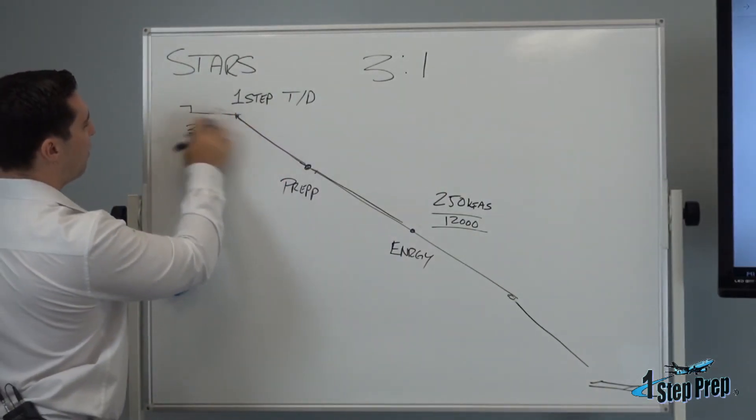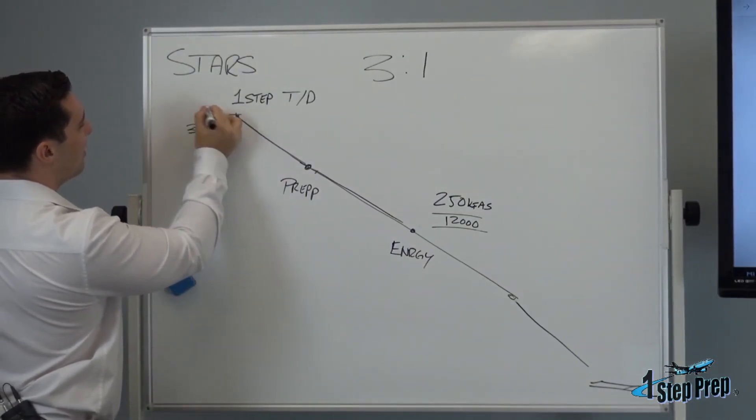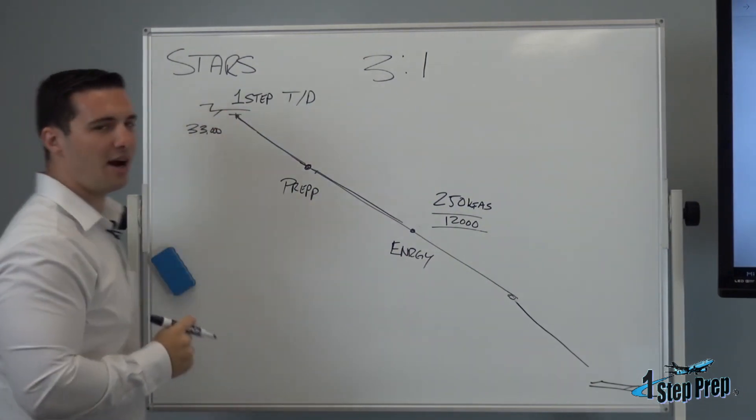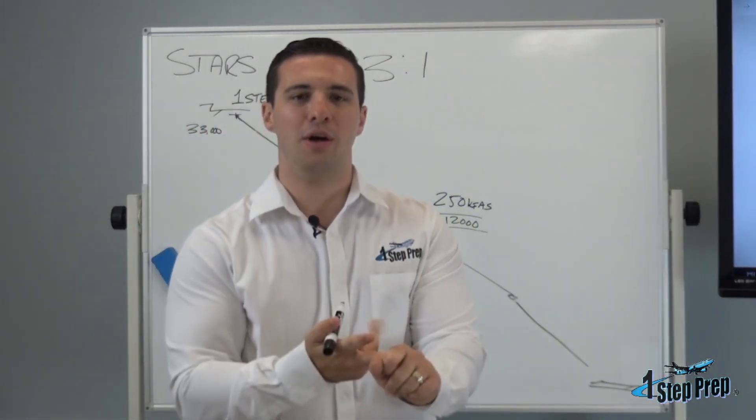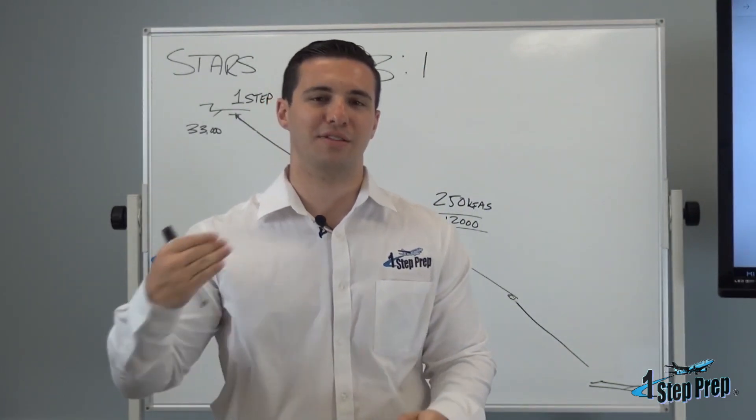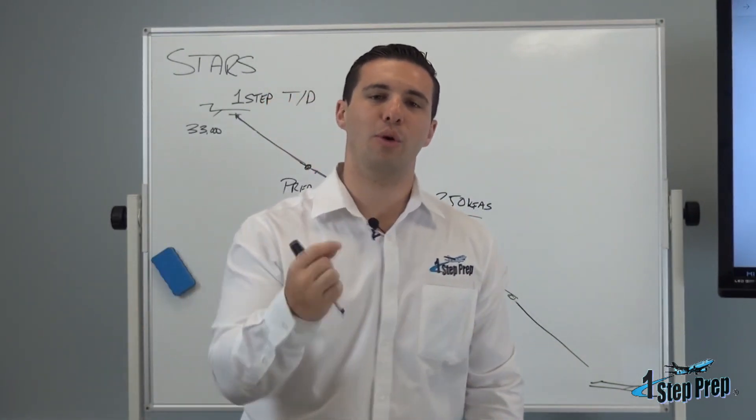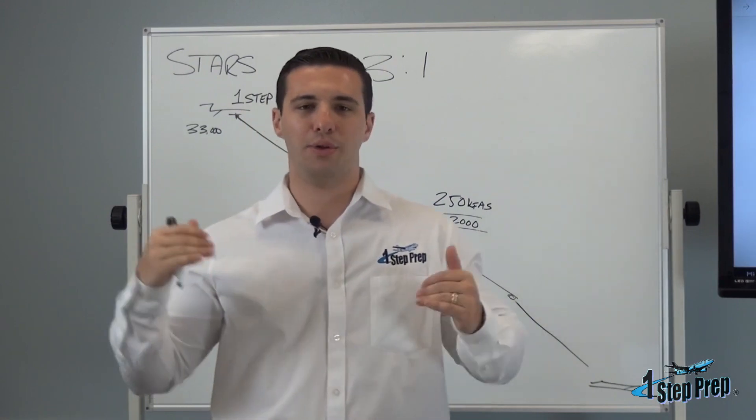Understand that the aircraft would like to descend as close as possible to idle thrust. It's more efficient, of course burns less fuel, more comfortable for passengers, less noise in the cabin. And so we're always trying to descend with idle thrust.